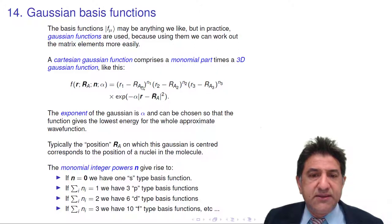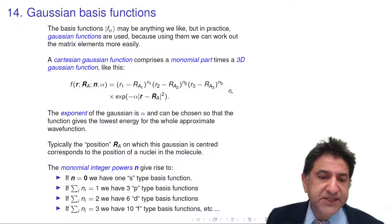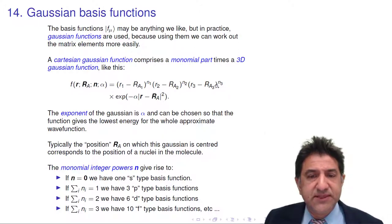And if two of these numbers, if the sum of these numbers is equal to 2, we have a D-type. If the sum of these numbers is equal to 3, we have an F-type and so on. Turns out there are 6 D-functions: XX, YY, ZZ, XY, XZ, YZ, that's 6. And you can count up there are 10 F-type functions.